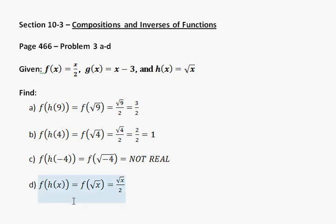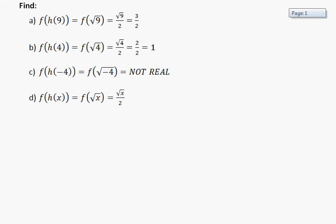Now the f of h of x just says take h of x and put it into this f function. So h of x is equal to the square root of x, so you just have f of square root of x, which is the square root of x over 2.